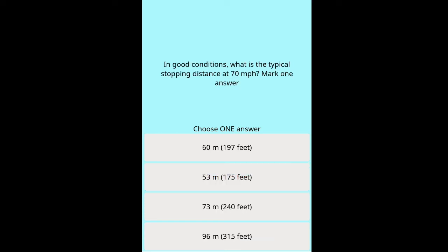Scenario Question 2: In good conditions, what is the typical stopping distance at 70 mph? Options: 60 m (197 feet), 53 m (175 feet), 73 m (240 feet), 96 m (315 feet).